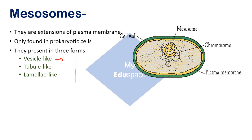The next form is tubule-like. In this, it is present in the form of a tube. This is the cell wall, and if the plasma membrane extends inside the cytoplasm in the form of a tube, it is called tubule-like.